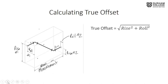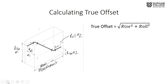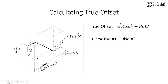Calculating true offset: true offset equals rise squared plus roll squared, added together and square rooted. To find rise, take rise one and subtract rise two — always keeping in mind we should end up with a positive number. If negative, swap the numbers. Then take roll one minus roll two to get the actual roll. Once we have both, plug them into the equation.